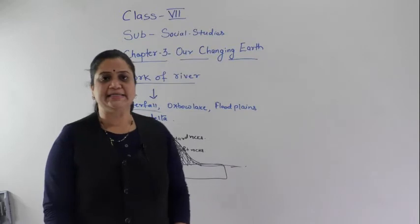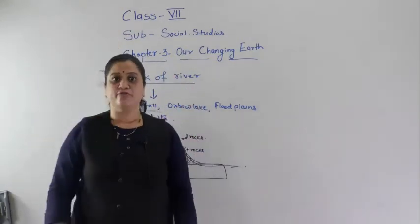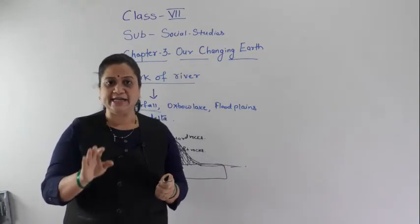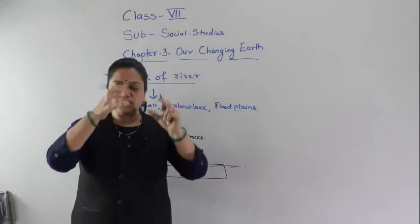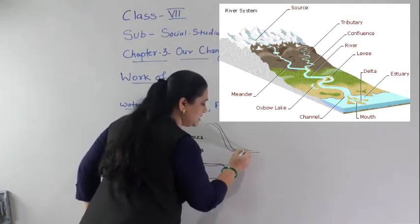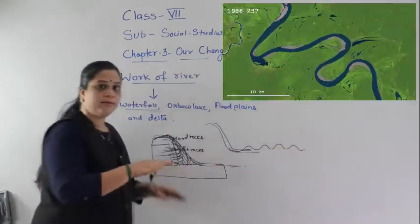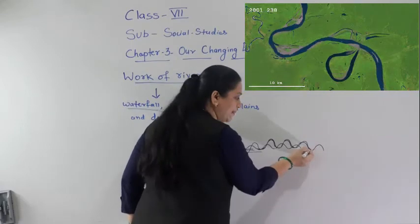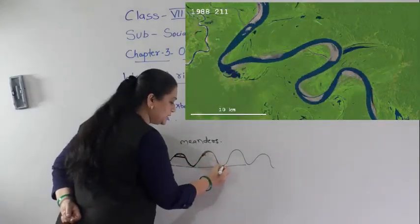For example, if you pour a glass of water on your head it falls with great force directly, but if you throw water on the floor it spreads slowly in different shapes. Similarly, when the river originates from the mountains it falls with great force, but when it enters the plain its speed decreases. Because of the unequal level of the plain surface, it flows in a different curved shape — these curves are called meanders.